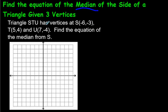So we have three vertices and we can plot those right away. Let's do that before we start talking about what a median is. So negative 6, negative 3, and that's S, negative 6, negative 3.